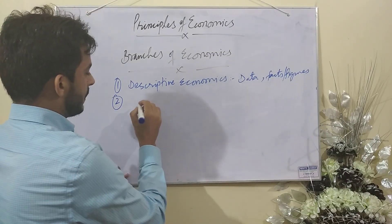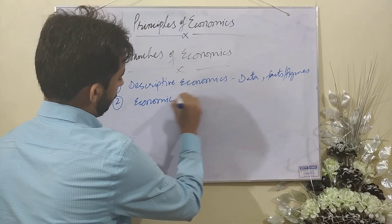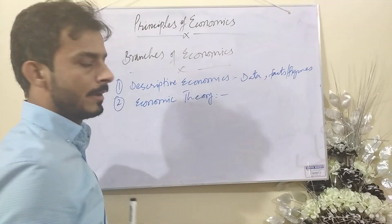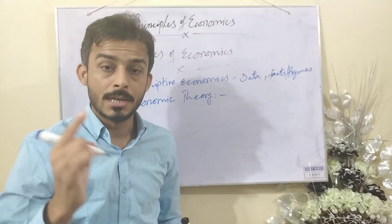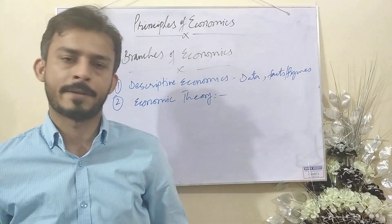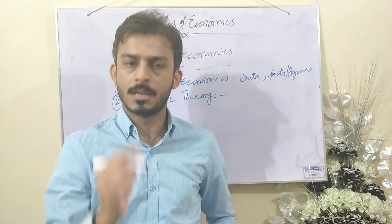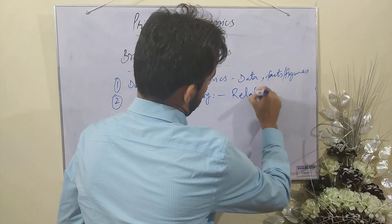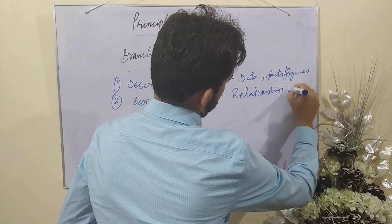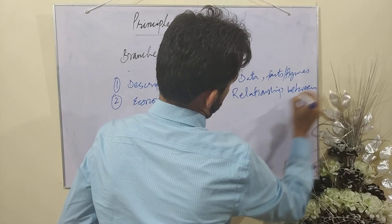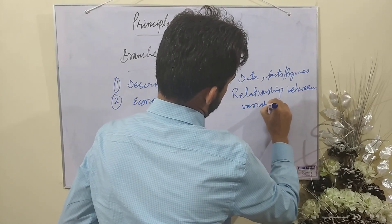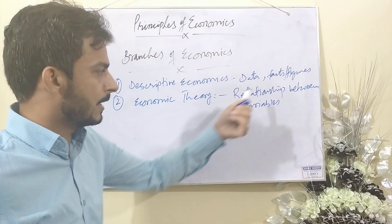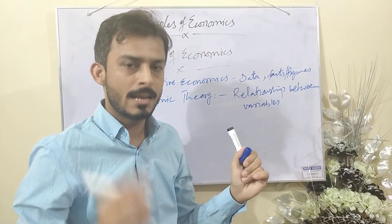On the basis of this data collection, the second level of economics is economic theory. This branch usually talks about the relationship — and the key word here is the relationship between variables.